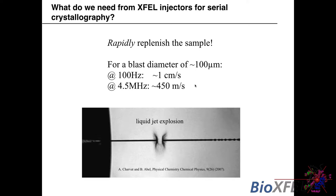At roughly 120 Hz (LCLS repetition rate), if the blast radius is around 100 microns, that tells you how fast to move the particles to avoid re-exposing the same region — you'd need to move about a centimeter per second. Future sources reaching the megahertz regime, like the European XFEL operating at 4.5 MHz (220 nanoseconds between pulses), would require practically sonic speeds for the jet to avoid the 100-micron damage region. Jets are going to have to go fast, especially for megahertz repetition rates.